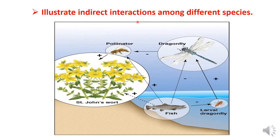The food web also illustrates indirect interactions among different species. For example, here is a plant — plants interact with bees, which are pollinators.